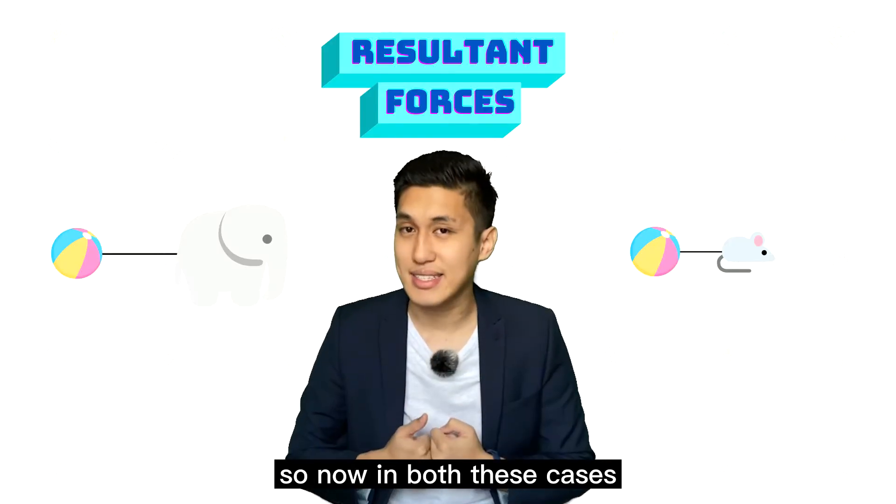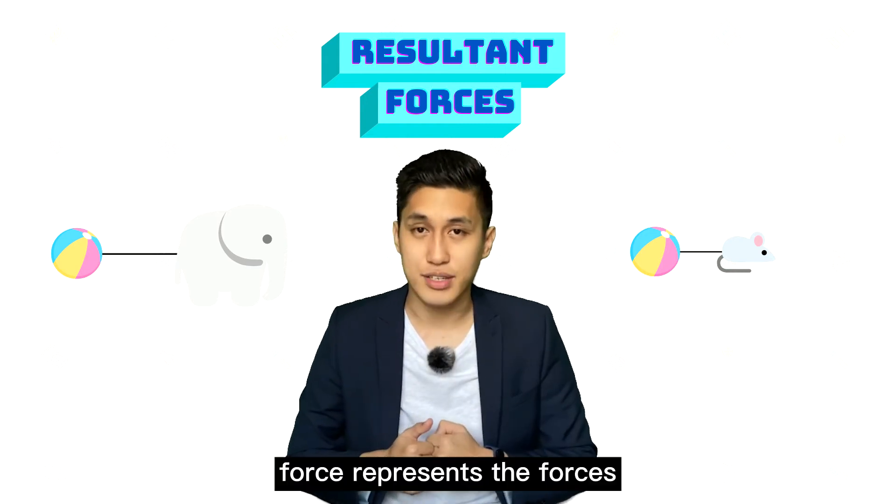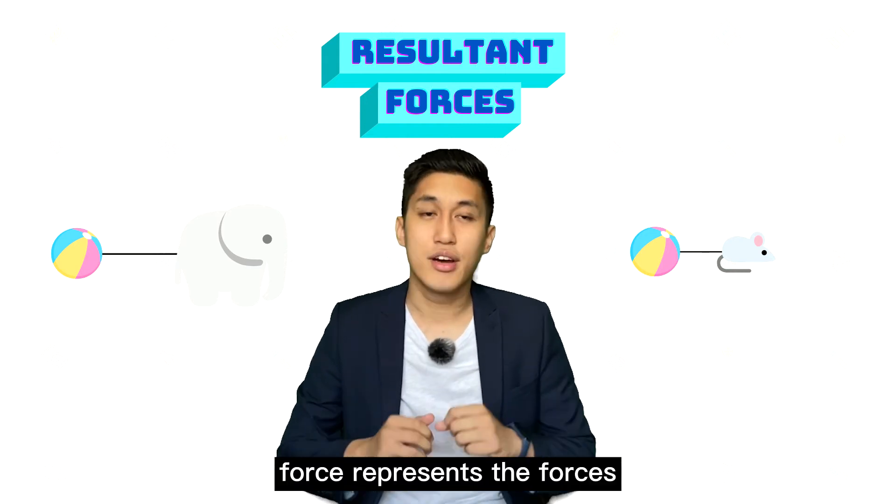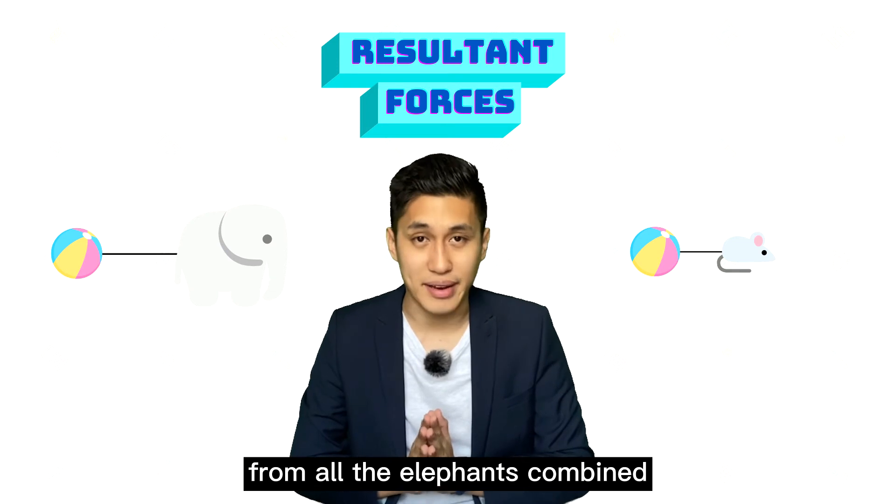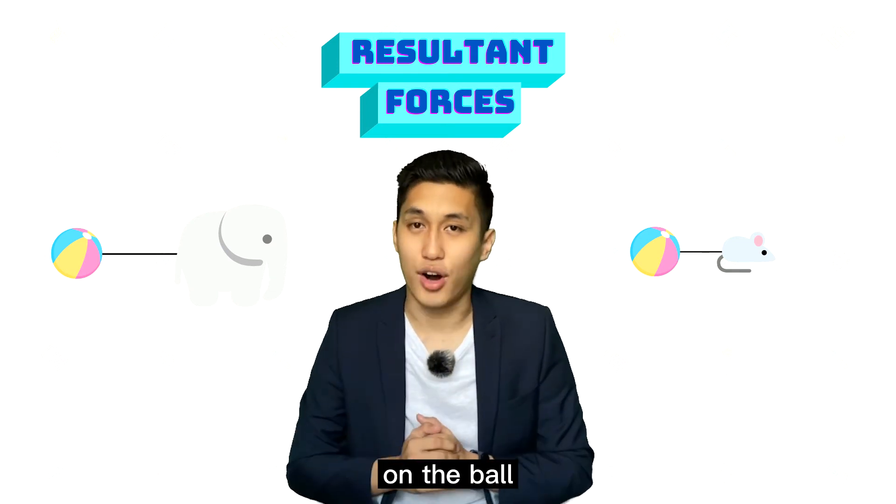So now, in both these cases, the results are the same. So I can say the mouse force represents the forces from all the elephants combined. So the mouse is like the resultant force from all the forces on the ball.